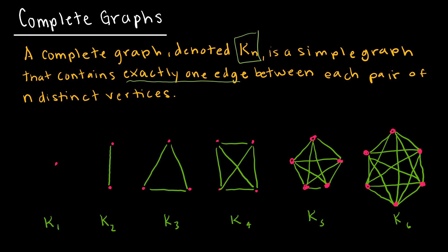I've drawn some of these out for you. K1 obviously means there is just one vertex, which means there are no edges because a loop would make it no longer a simple graph. K2 is two vertices connected by one edge, K3 is three vertices, K4 is four vertices, and notice each one is connected to each other.